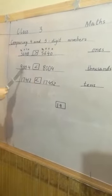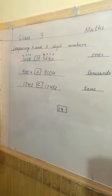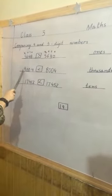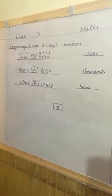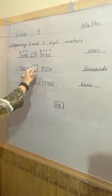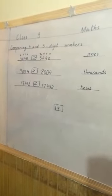Next question: 9004 and 8004. So in these 2 values, which one is greater? 9, 8. Which one is greater? 9 is the greatest value. So crocodile opens his mouth on the side of 9.